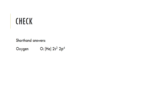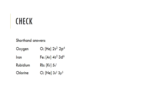Now try the shorthand for the elements already worked: oxygen, iron, rubidium, and chlorine. Oxygen uses helium, so [He] 2s2 2p4. Iron uses argon, so [Ar] 4s2 3d6. Rubidium uses krypton — it comes immediately after krypton on the periodic table — so [Kr] 5s1. Chlorine uses neon, so [Ne] 3s2 3p5.